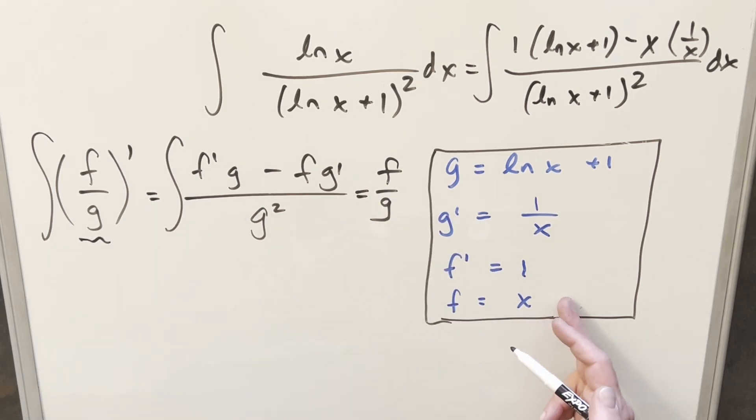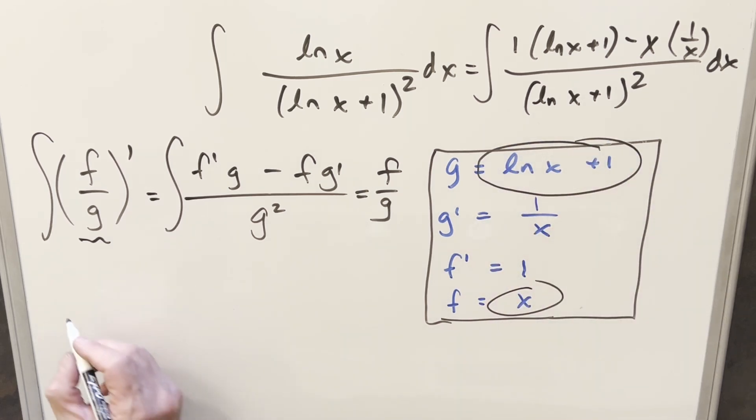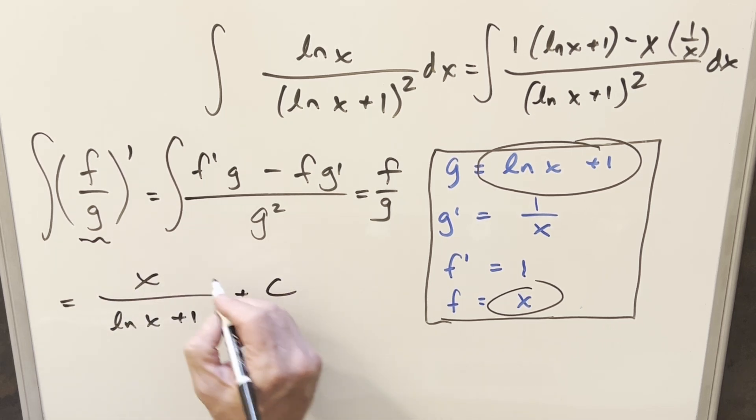But we know what that is from our little table over here. f is going to be x, g is going to be natural log of x plus 1. So for my final solution is we just have x over natural log x plus 1, add a plus c, and that's it.